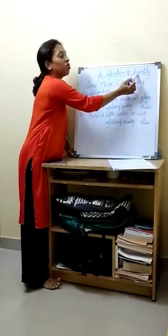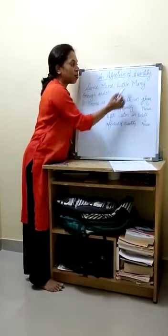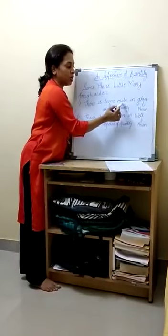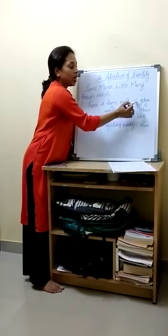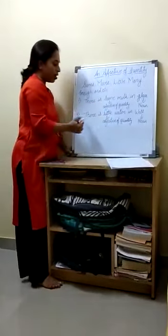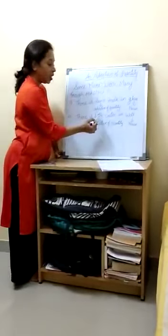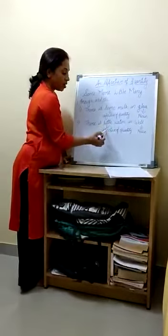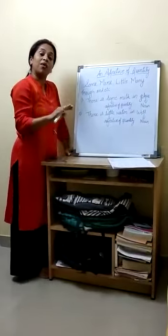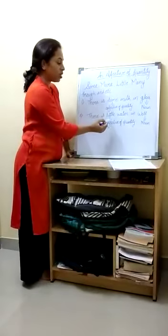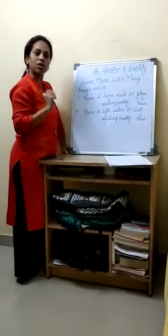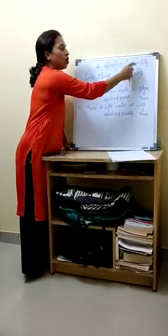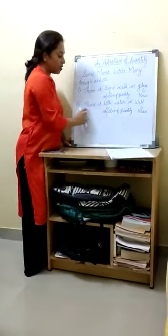What is it telling? It is telling about the quantity. It is telling about the quantity of milk. And glass is a noun. Adjective of quantity here refers to milk in the glass. Our second example is: there is little water in the well. Little is the adjective of quantity, telling how much water is there in the well.